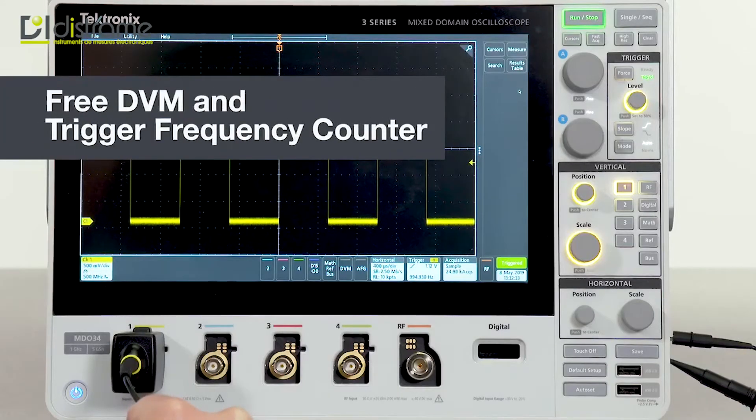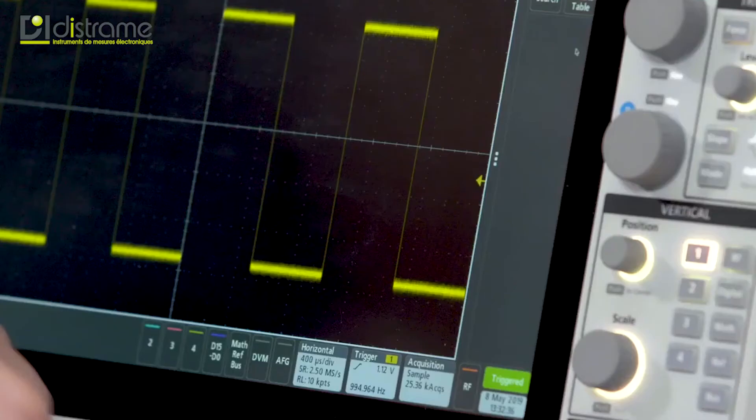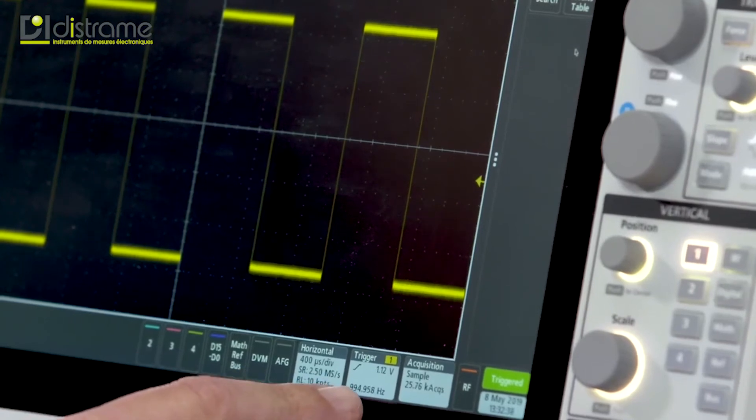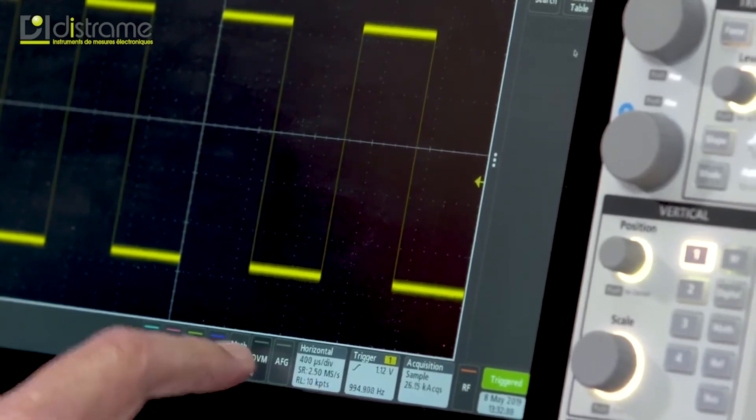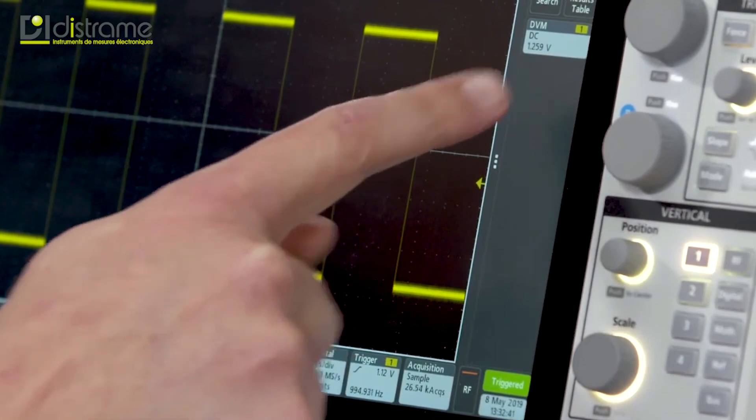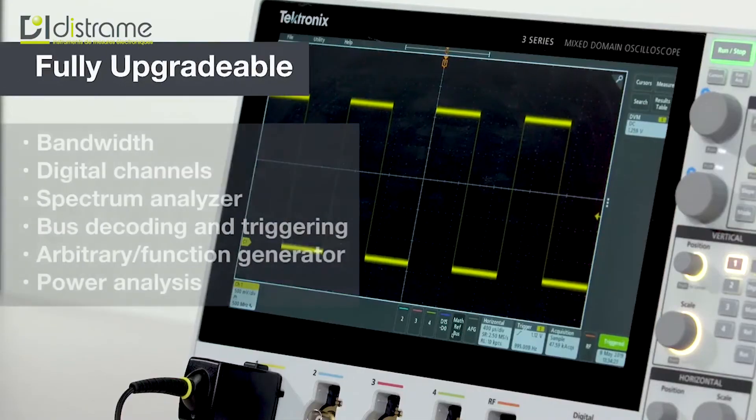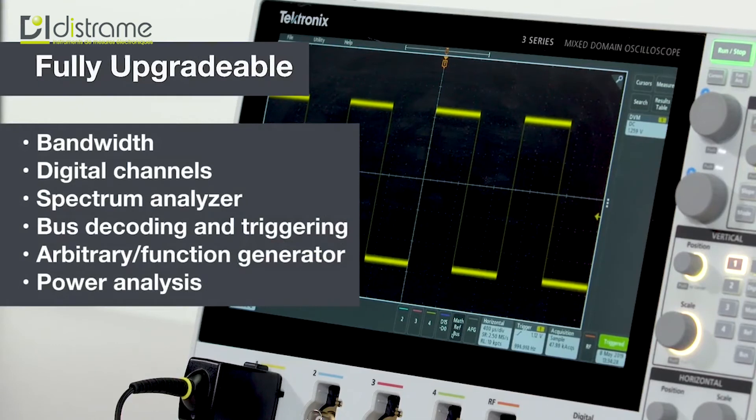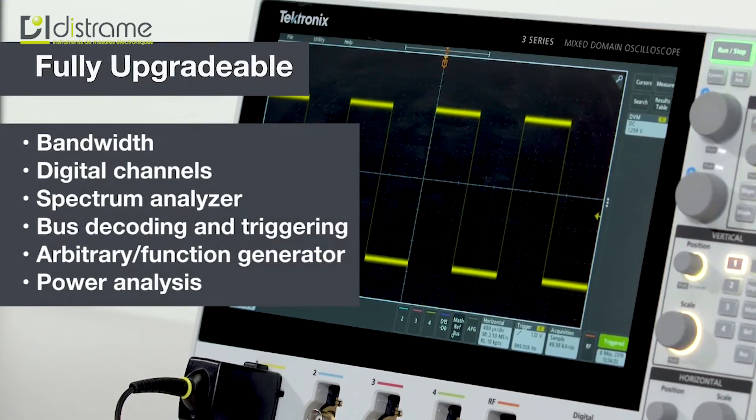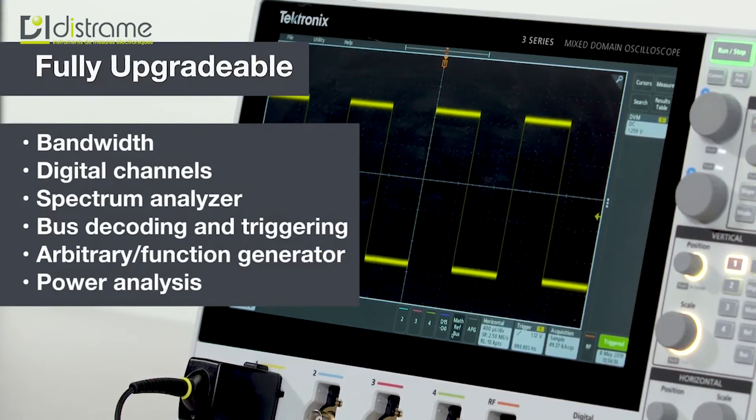When you register your 3 Series MDO, you get a license for free access to a trigger frequency counter and an integrated DVM. All of the functions I've talked about in this section can be configured in a new instrument or they can be added later. You can even upgrade bandwidth. So you can buy what you need today and add performance and capabilities as you need them in the future.